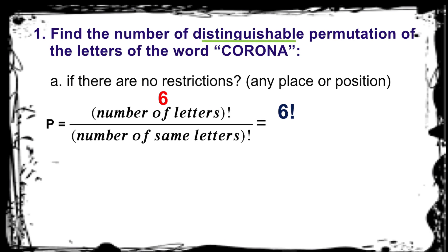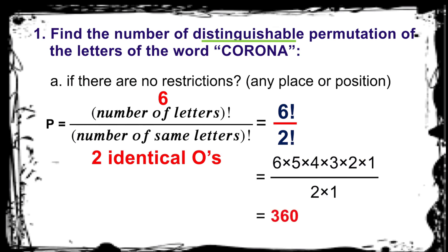Which letters are identical? Yes, correct. There are two identical O's. So 2 factorial. 6 factorial is 6 times 5 times 4 times 3 times 2 times 1 divided by 2 times 1. Cross out the same numbers. What is the final answer now? Yes, 360.